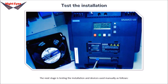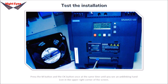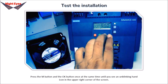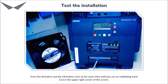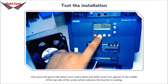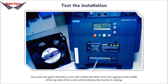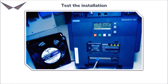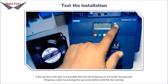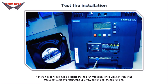The next stage is testing the installation and devices manually. Press the M button and the OK button simultaneously until you see an unblinking hand icon in the upper right corner of the screen. Then press the green ON button until a black-and-white circle icon appears at the top of the screen, indicating the inverter is running. If the fan does not spin, the frequency may be too weak — increase the frequency by pressing the up arrow button until the fan runs.